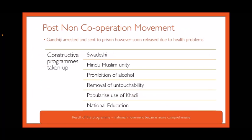Post Non-Cooperation Movement. Gandhiji was arrested in March 1922 because he wrote three anti-government articles. A court was set up at Ahmedabad and Gandhiji was sentenced to six years of imprisonment; however, he was soon released due to health problems. Along with the Non-Cooperation Movement, Gandhi had started other constructive programs like Swadeshi, Hindu-Muslim unity, prohibition of alcohol, removal of untouchability, popularizing use of khadi, and national education. As a result, the national movement became more comprehensive and spread to rural areas.